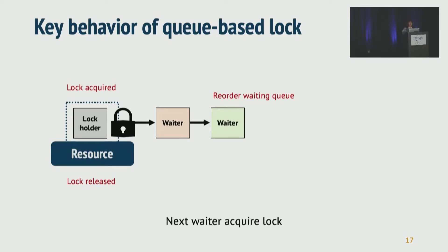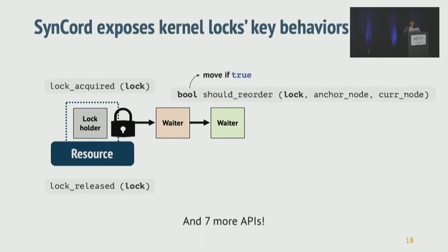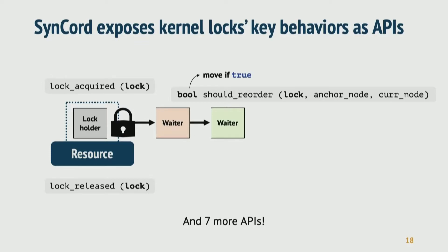We followed these key behaviors. What Synchrod does is expose these behaviors as APIs to the user. These APIs serve as hooking points where the user's custom code will be inserted. The should_reorder API is a little more special than other APIs because it asks the user to return a boolean value. Similar to the comparison function for a sort function, when should_reorder returns true, it moves the current node forward. Otherwise, when it returns false, the node just stays in its position in the queue.